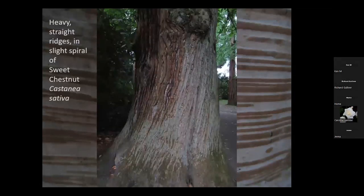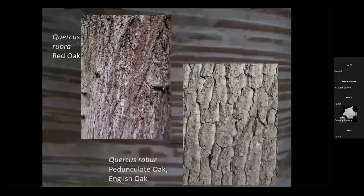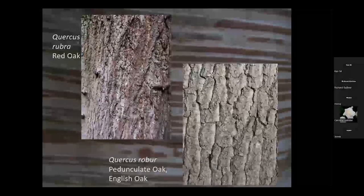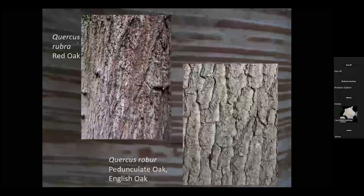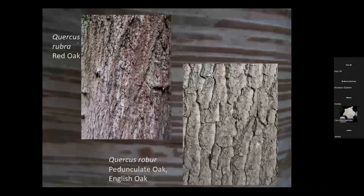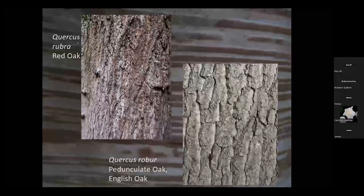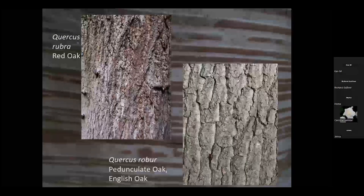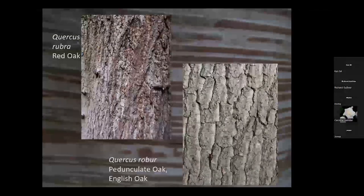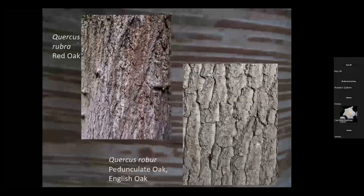This one is slightly spiralled but heavily ridged — I'm sure you'll recognise that as a sweet chestnut. We have some fantastic sweet chestnuts with enormous girths. By comparison, Quercus rubra, the red oak on the left, is not as ridged as the pedunculate oak — Quercus robur — where the bark is heavily ridged, almost in cubes or rectangles. You need to get familiar with the trees in summer and then use the bark as your identifier in winter.